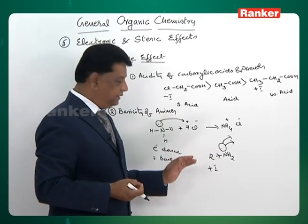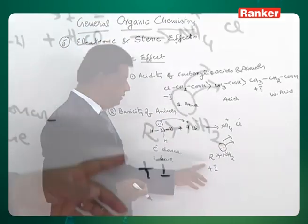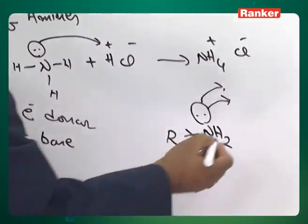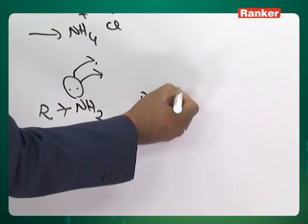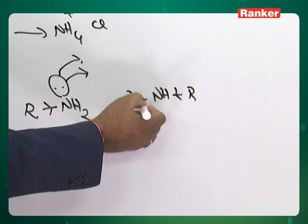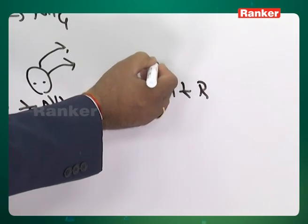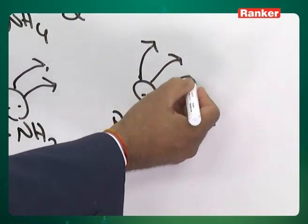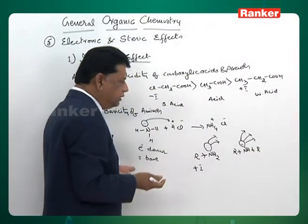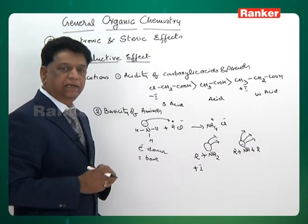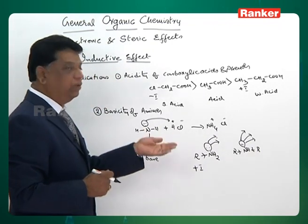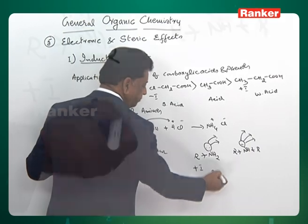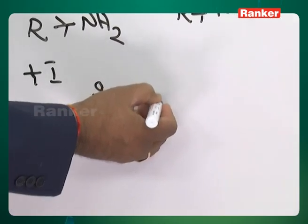Original ammonia has a donating capacity, but the increased donating capacity is only found in alkyl-substituted amines. When two R groups are present, the original donating capacity gains one more added increment. Naturally, two-alkyl-containing ammonia is found to be more basic. This is called a primary amine or one-degree amine.